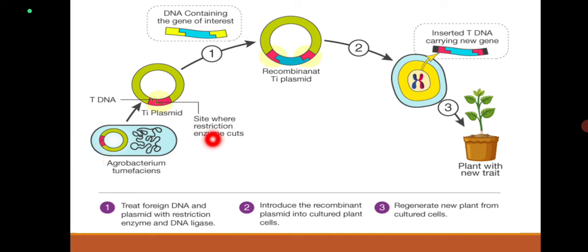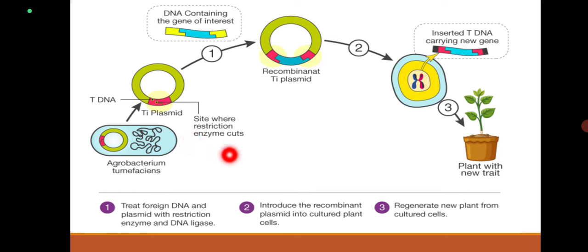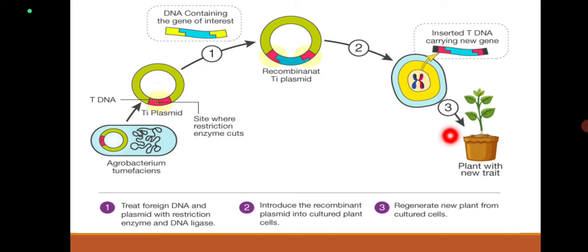In agriculture, one important method is agrobacterium-mediated gene transfer. Agrobacterium is a soil bacterium that infects plants through the root system, enters the stem, and increases metabolism of certain amino acids, causing bulging of stems — a tumor-like tissue forms in the plant because of Agrobacterium tumefaciens infection. From this bacteria, we isolate the Ti plasmid — the tumor-inducing plasmid. Certain genes associated with the tumor-inducing nature are present in this plasmid, and in that region we make a cut using a restriction enzyme.